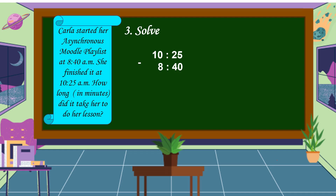25 minus 40 cannot be done, so we're going to borrow one from 10. 10 becomes 9, and 25 becomes 85. How does it become 85? It is because we borrow one hour from 10, and that one hour we're going to convert into minutes. One hour is equal to 60 minutes. So we have 25 plus 60, which is equal to 85. Then we can subtract: 85 minus 40 is equal to 45, and 9 minus 8 is equal to 1.